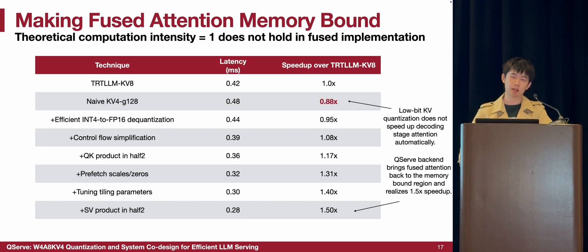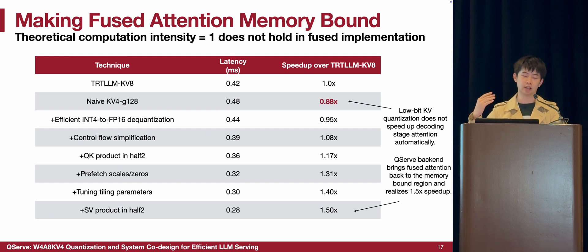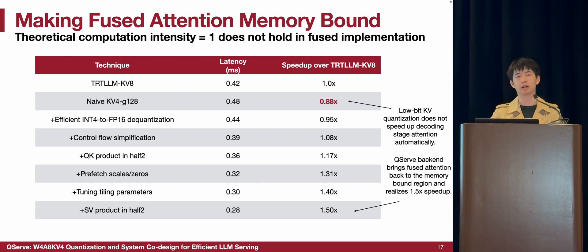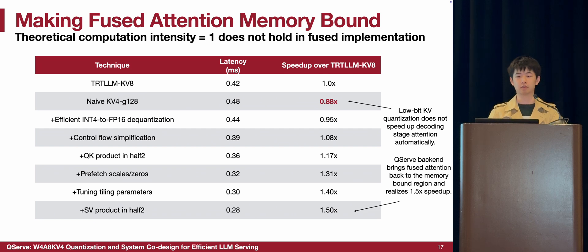Now let's talk about how we accelerate the attention computation. We start from the 8-bit KV cache attention kernel from TensorRT-LLM and find that directly applying 4-bit quantization actually makes the attention kernel slower than the original, because the added dequantization makes the kernel no longer memory-bound but compute-bound. To solve this, we introduce optimization techniques including efficient INT4-to-FP16 conversion, control flow simplification, and zero-point and scaling factor fusion. All these optimizations accelerate the attention kernel by 50% compared to the original TensorRT-LLM template with 8-bit KV cache.